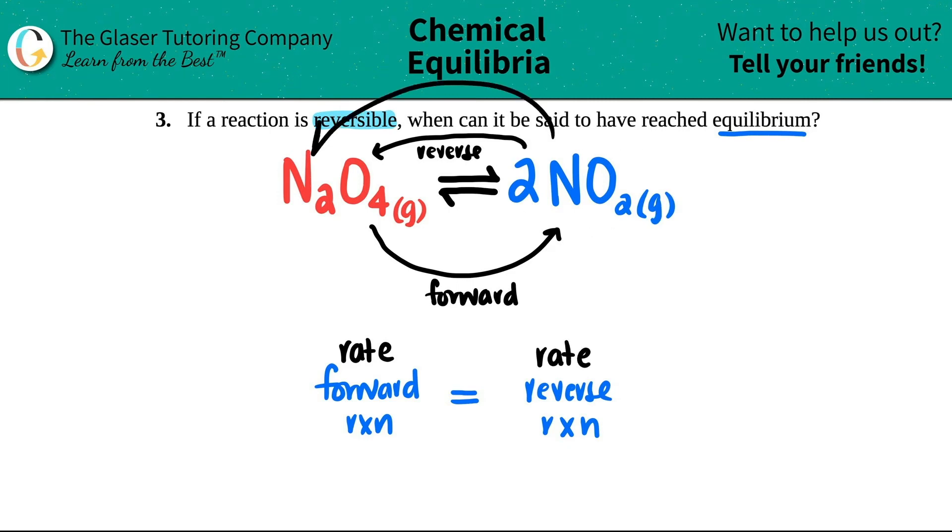And the rate of the reverse reaction, 2NO2s going back to N2O, the rate, how fast the reactions are happening, is the same.